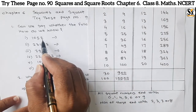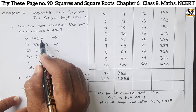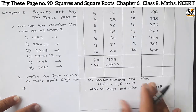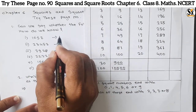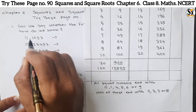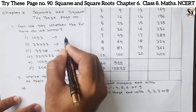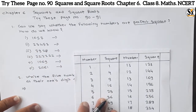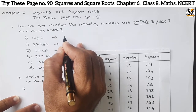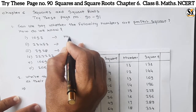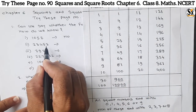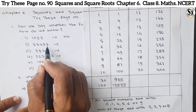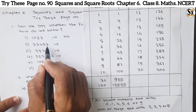The first number is 1057. Here the unit place is 7. We know if the unit place is 7, it is not a perfect square. So we write: 1057 is not a perfect square number. Now the next one: 23453. Here at the unit place is 3, meaning this number ends with 3.